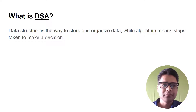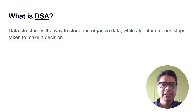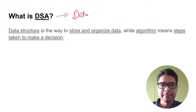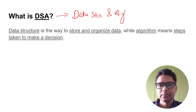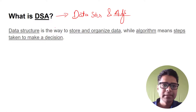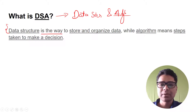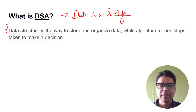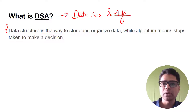So first of all, what is DSA? DSA stands for Data Structure and Algorithm. What is data structure? Data structure is the way to store and organize data. It's the way with which we are going to organize or store our data — this is very important.